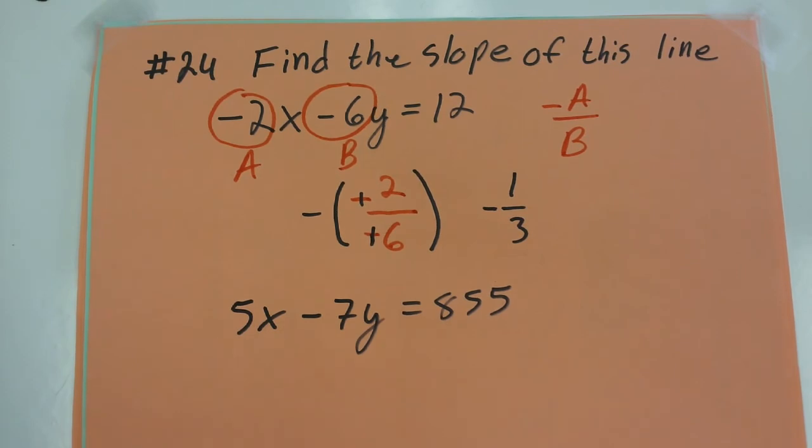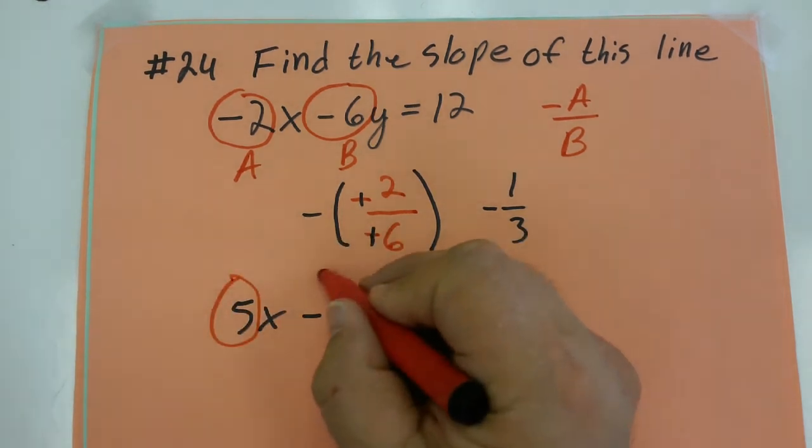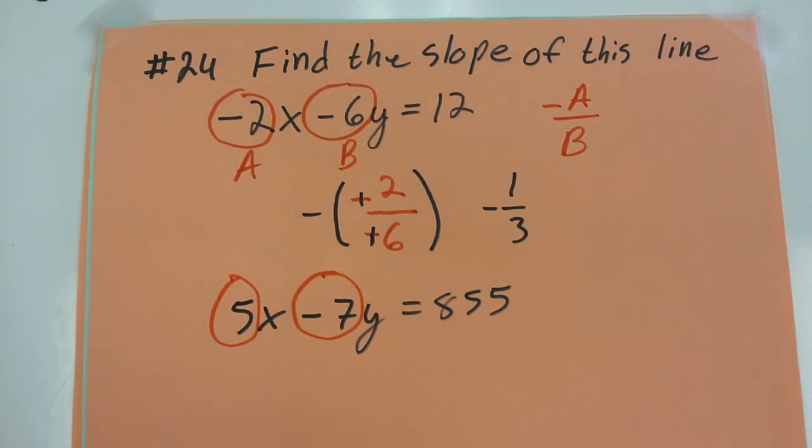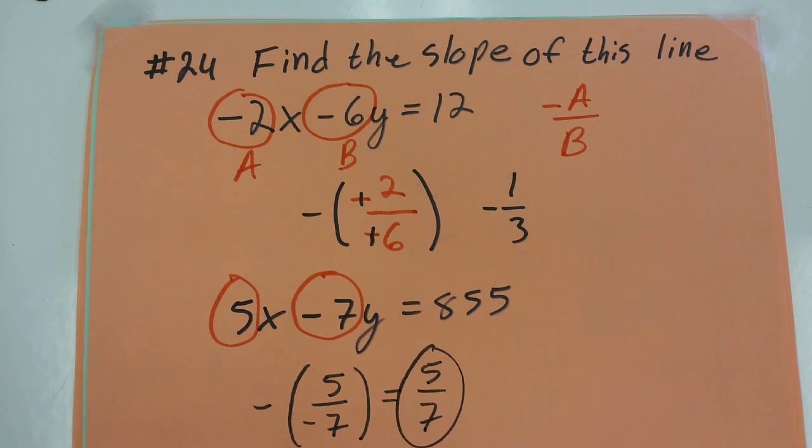I want to do a couple more examples so you can see how quickly this works. So I'm going to take this number and put it over this number. That gives me 5 over negative 7. And then you just throw a negative in front of that. So a negative negative, that's going to give me a slope of 5 over 7. And it goes pretty quickly.